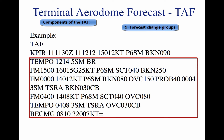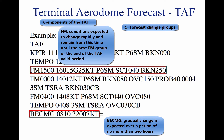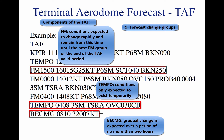9. Forecast change group. For any significant weather change forecast to occur during the TAF time period, the expected conditions and time period are included in this group. This information may be shown as From (FM), Becoming (BECMG), and Temporary (TEMPO). FM is used when a rapid and significant change, usually within an hour, is expected. Becoming is used when a gradual change in the weather is expected over a period of no more than two hours. Tempo is used for temporary fluctuations of weather expected to last less than one hour.